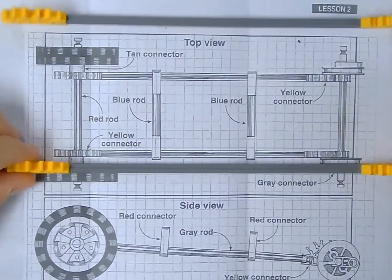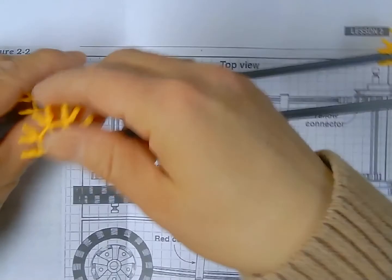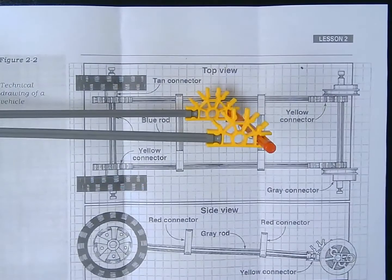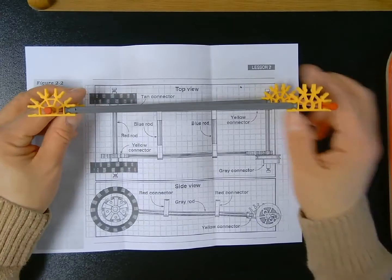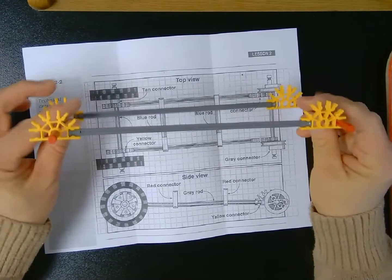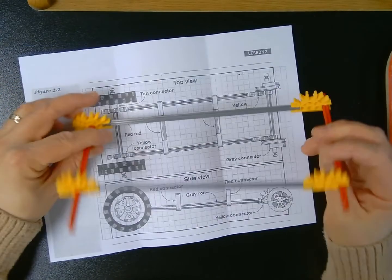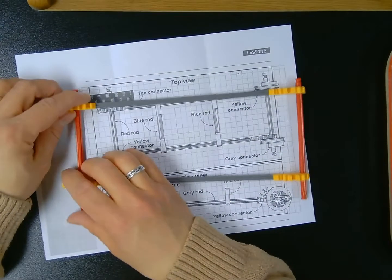But on the back, we're going to thread the red rod through the hole in the center of the yellow connector. So as you can see, my front axle is now fixed, but my back axle can spin freely. That's going to be important later on when we conduct different kinds of experiments with this standardized vehicle.